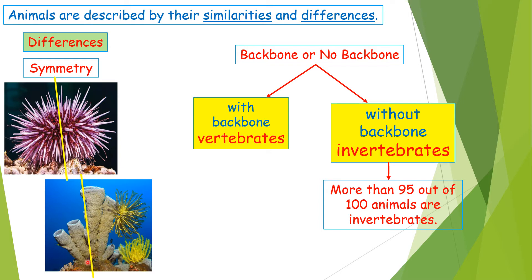Whereas a sponge animal — if we drew a line in the middle of it, this part of its body doesn't match the other part. So, symmetry means when an animal has a symmetry, its body parts match up with other parts around a midpoint or a line.